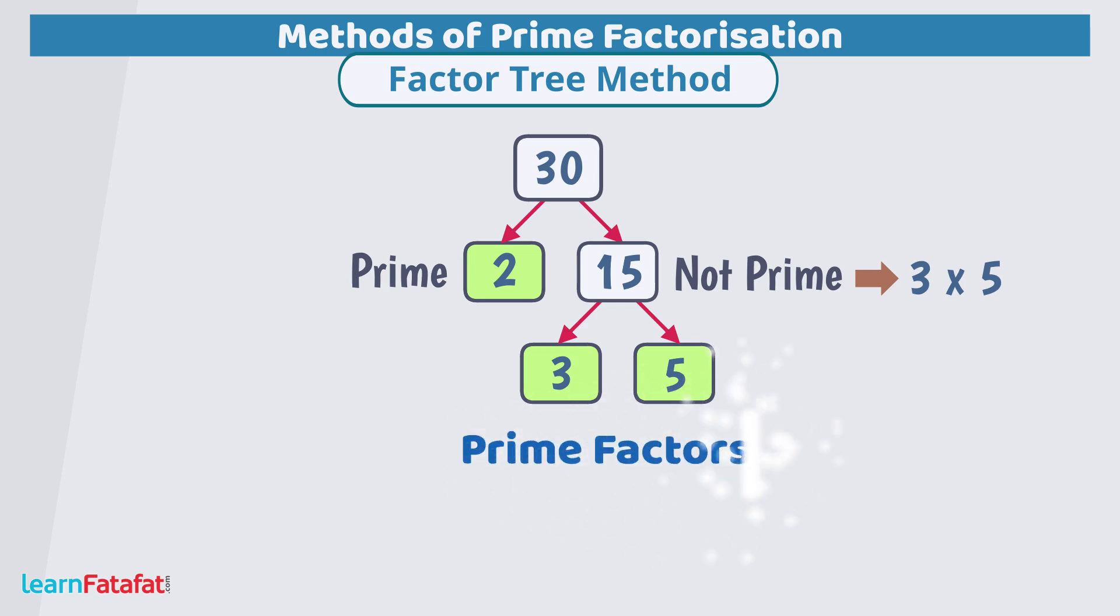Thus, we get prime factors 2, 3 and 5. This arrangement looks like an upside down tree. Thus, the name of this method is factor tree method.